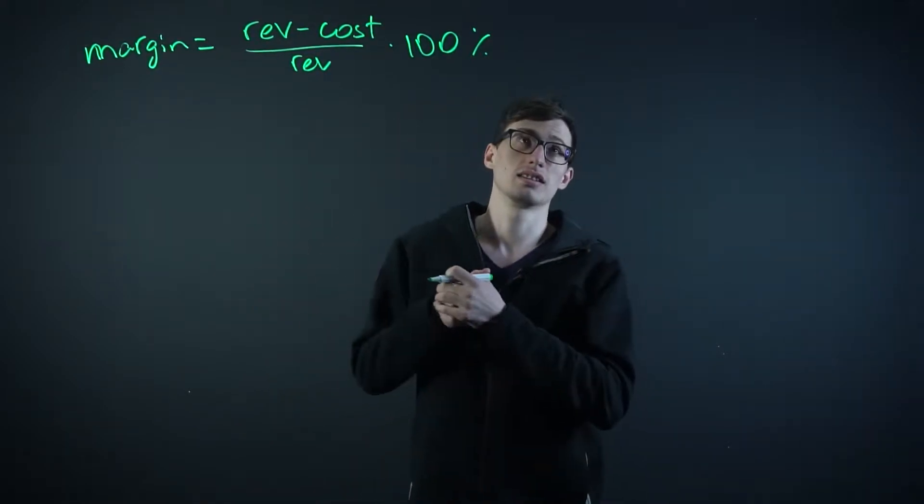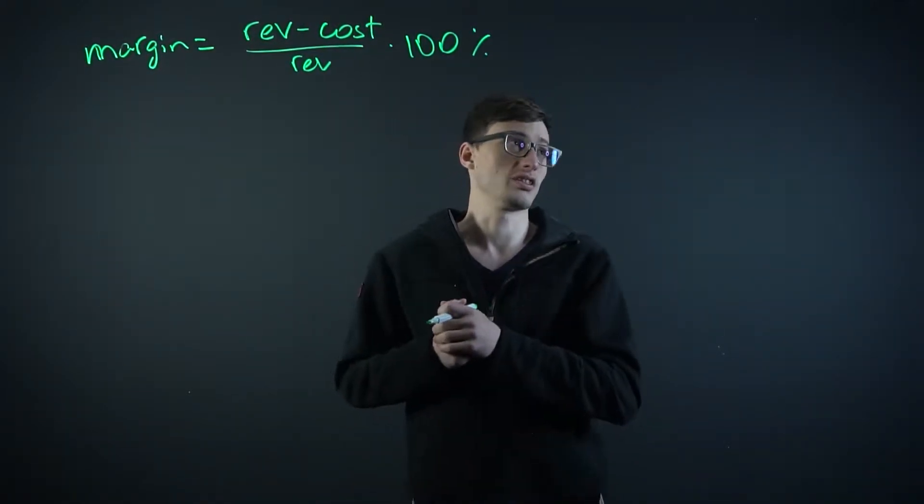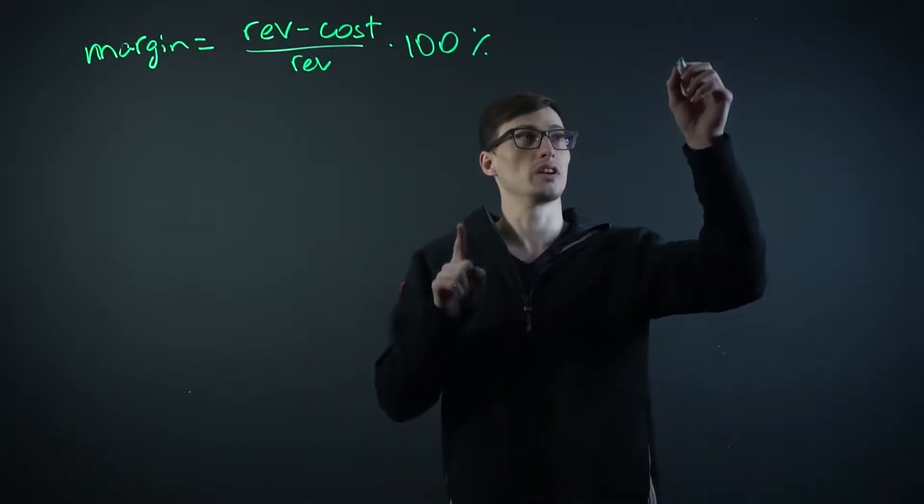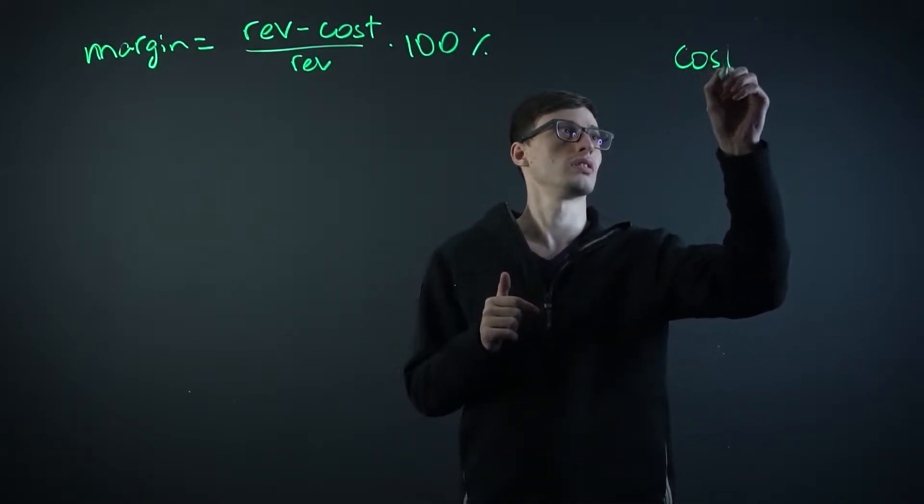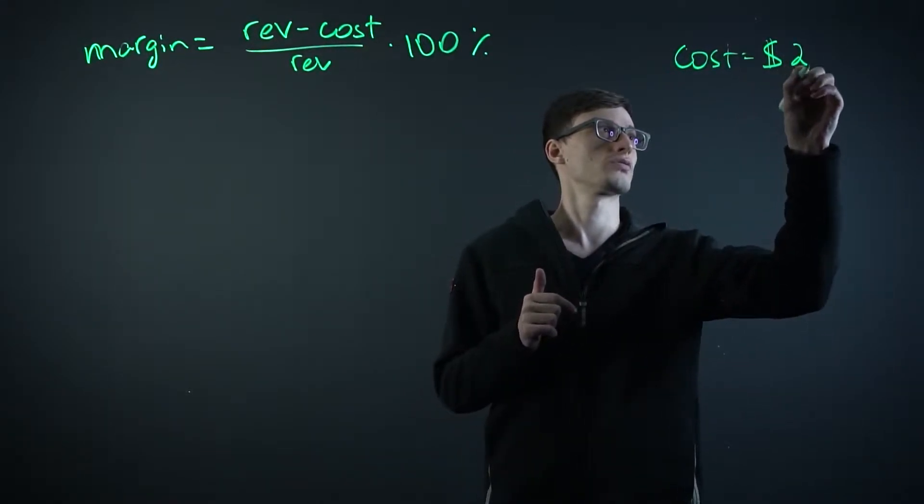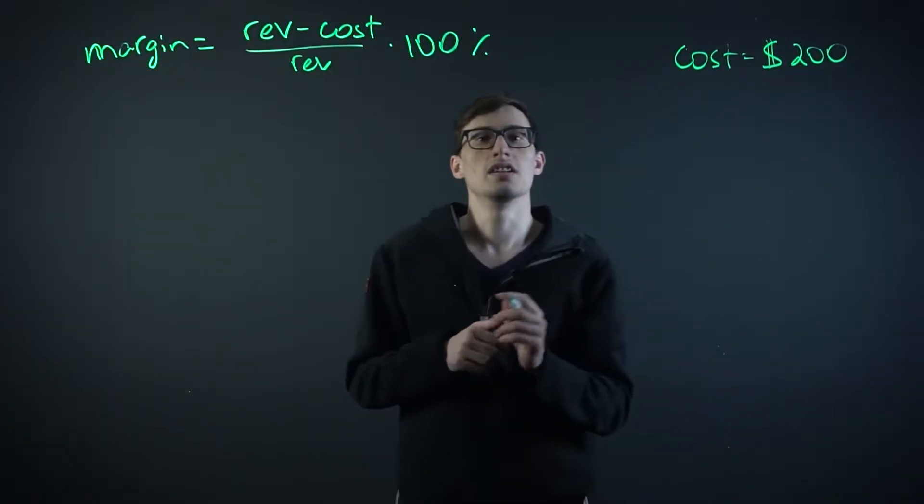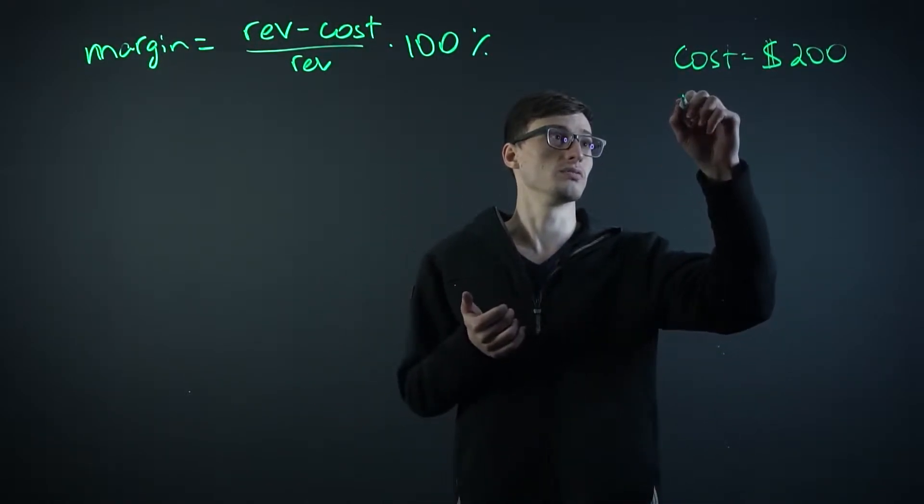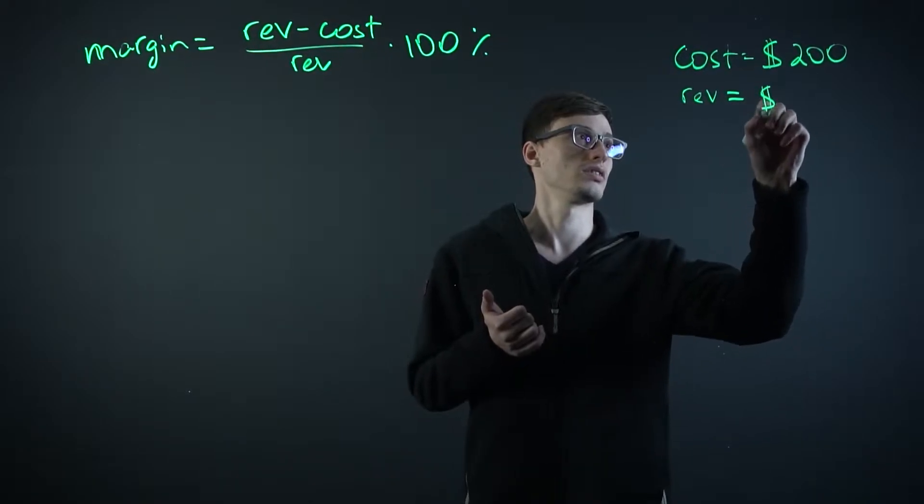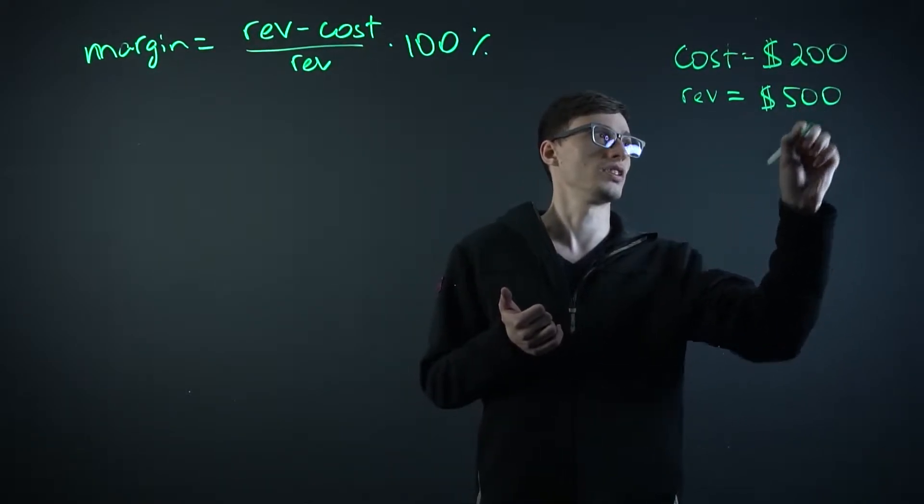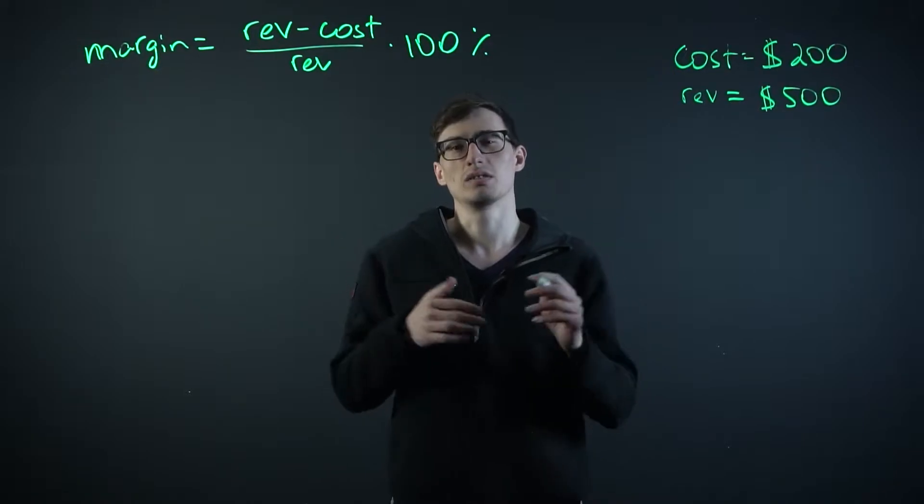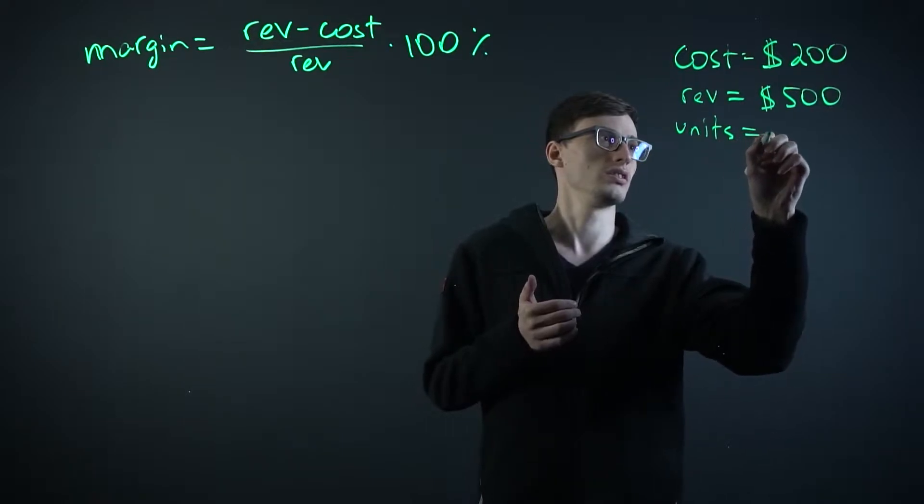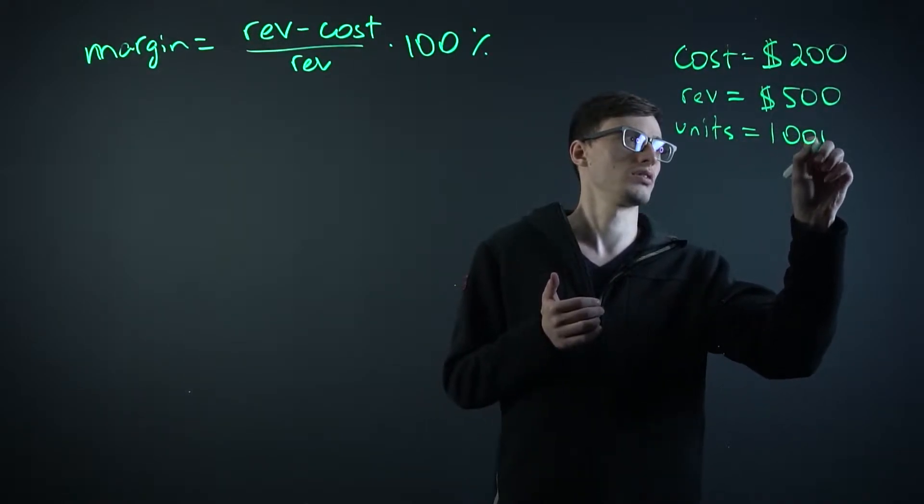Now, let's get started with the example. Say you're a laptop manufacturer and you're making laptops, and your cost to make one laptop is $200. And you're selling each one of these laptops for $500. So your revenue for each one is $500. Now let's say that you sell about 1,000 a month. We'll talk about just one month. So units is 1,000.